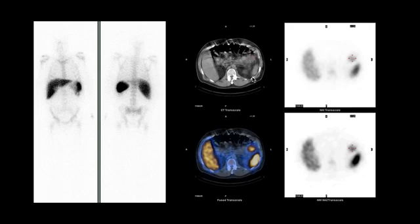When we did a SPECT CT, we found that this focus, seen here on the fused transaxial SPECT CT image, corresponds to a focus of ill-defined soft tissue density with some peripheral fat stranding in the left upper quadrant. On a follow-up contrast enhanced CT, this was found to be a focus of abscess formation related to diverticulitis. So SPECT CT helped in localizing this focus of abdominal infection.